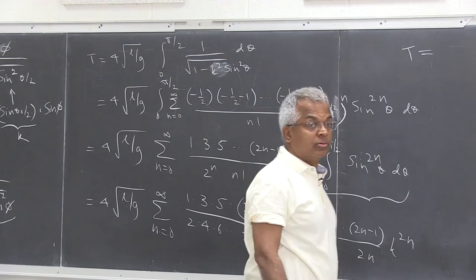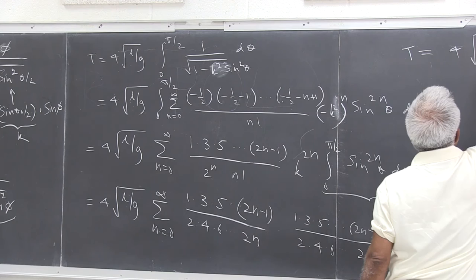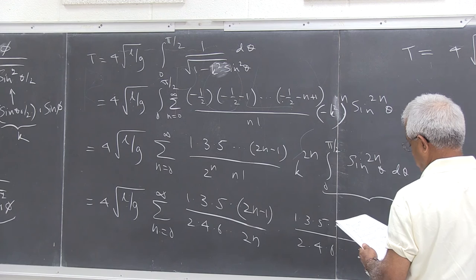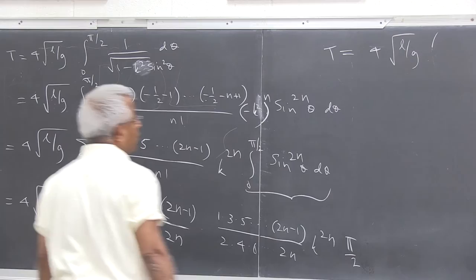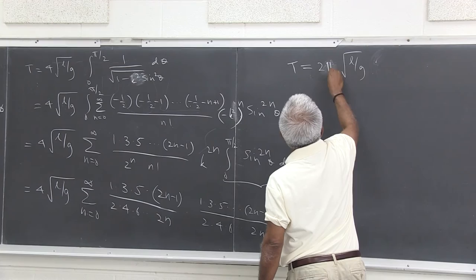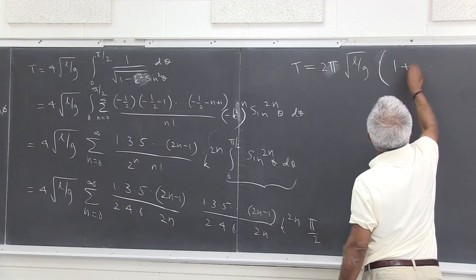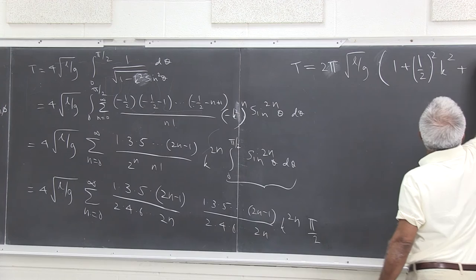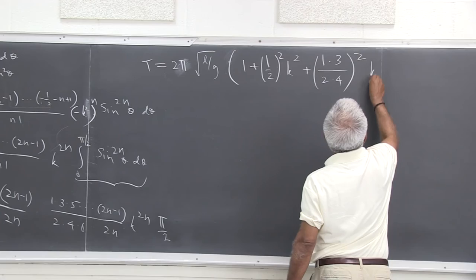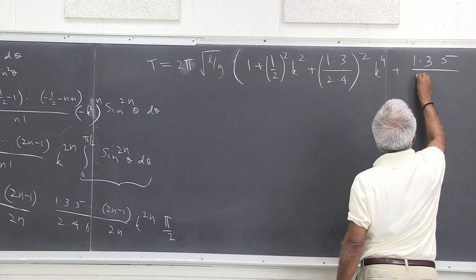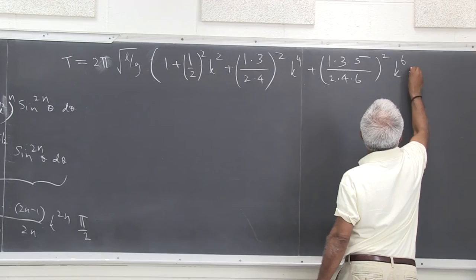In particular, this means T = 4√(l/g) times π/2, and the 2's cancel, giving 2π√(l/g) times the parenthetical series: 1 + (1/2)²k² + (1·3)/(2·4))²k⁴ + (1·3·5/(2·4·6))²k⁶ + etc.